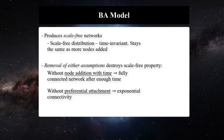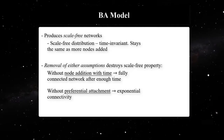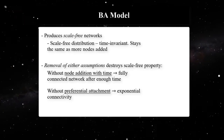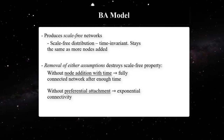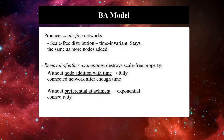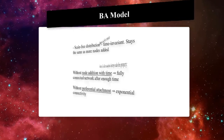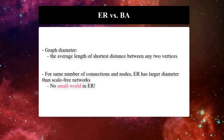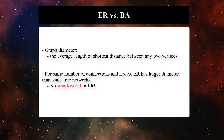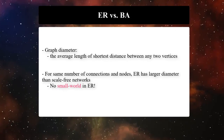The BA model produces scale-free networks, which are time-invariant — meaning the network stays the same as more nodes are added. Removal of either assumption destroys the scale-free property. Without node addition over time, we end up with a fully connected network after enough time. Without preferential attachment, we get exponential connectivity. If we compare the average length of shortest distances between any two vertices in ER and BA models, we see that for the same number of connections and nodes, ER networks have a larger diameter than scale-free networks.